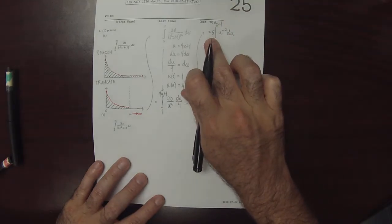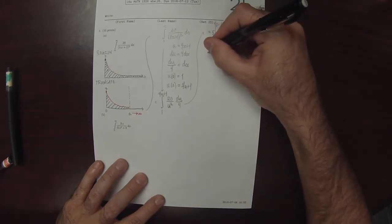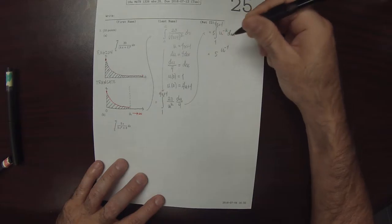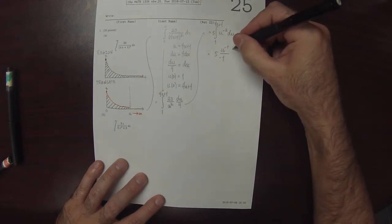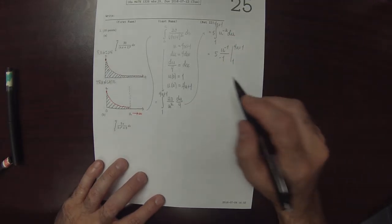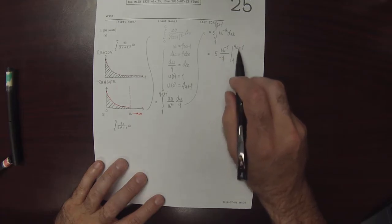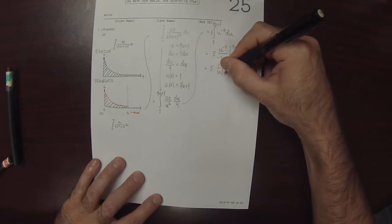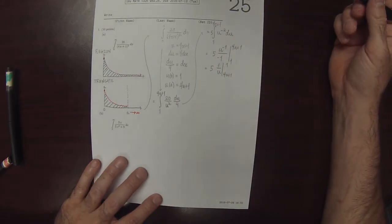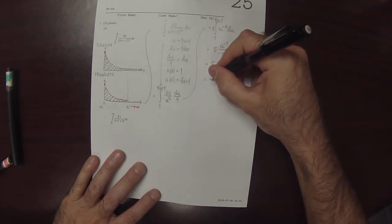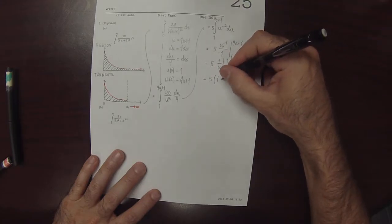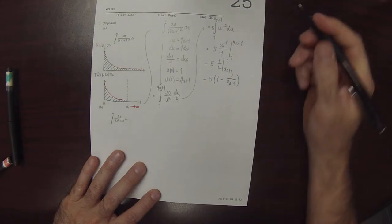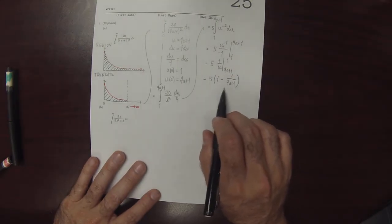So 5 is factored out because 20 over 4 is 5. We can use the power rule for this. So this would be 5 times u to the negative 1, divided by negative 1, evaluated from 1 to 4A plus 1. Using the negative to switch the order of evaluation, we get 5 times 1 over u evaluated from 4A plus 1 to 1, which equals 5 times 1 minus 1 over (4A plus 1).